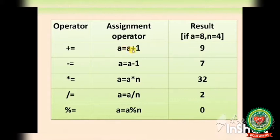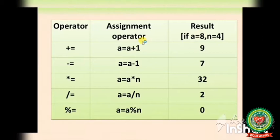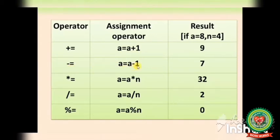Let's see how to write these operators. We have A equal to eight and N equal to four. A += 1 means we are assigning a new value to A: eight plus one gives nine. You can write any equation and after solving it, the output will be stored as the value of A. Next, A -= 1 means eight minus one, so the answer is seven.